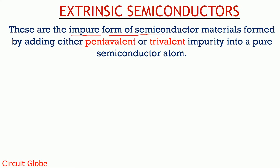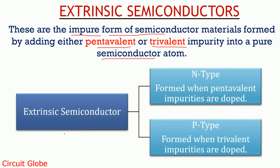After having an idea about how intrinsic semiconductors conduct, let's move further to understand the same for extrinsic semiconductors. Extrinsic semiconductors are basically impure form of semiconductor materials, formed when we add either pentavalent or trivalent impurity to a pure semiconductor material — that is, a tetravalent silicon or germanium atom. Extrinsic semiconductors are of two types: N-type and P-type.